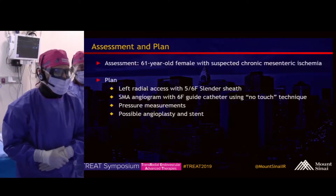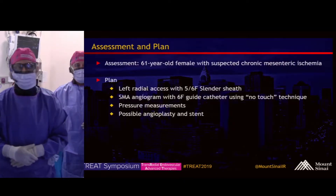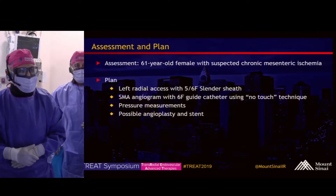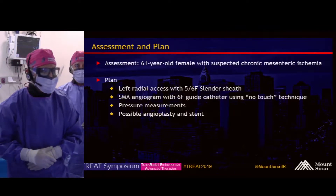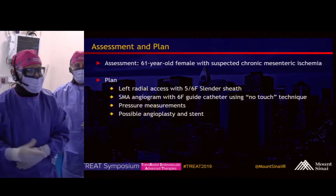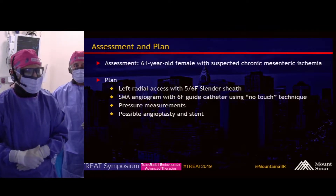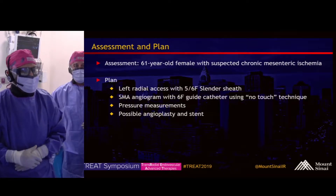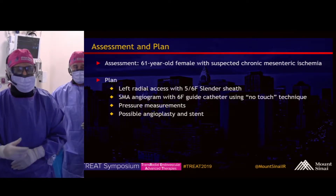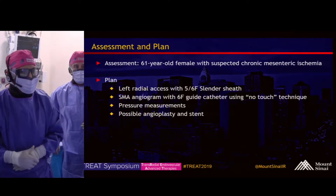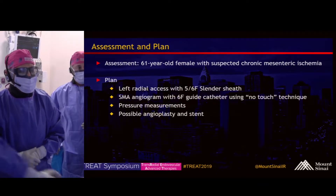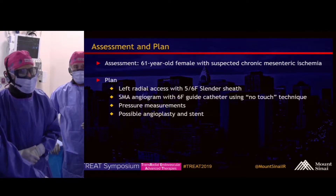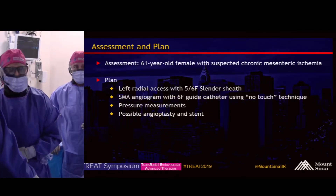Our assessment: 61-year-old female with suspected chronic mesenteric ischemia. The plan is to obtain left radial access with a 5-6 French slender sheath, perform an SMA angiogram with a 6-French guide catheter using the no-touch technique, get pressure measurements, and possibly perform angioplasty and stenting based on those results.